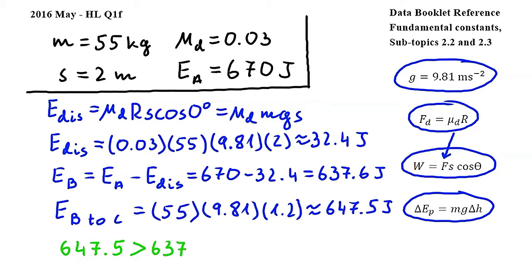Based on this, we can conclude that the block will not reach C. In order to earn the two marks on this question, it is important to show your reasoning and conclude that the block will not reach C. Simply writing down that the block will not reach C will not earn any marks.